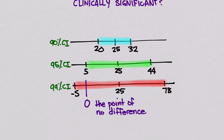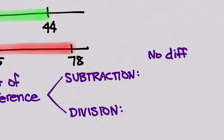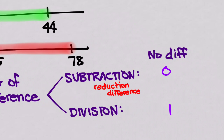Let's talk about this point of no difference a little more. When comparing things, you'll use two different methods: subtraction and division. When you subtract two things that are the same, you get 0 — that's when there's no difference. When you divide two things that are the same, you get 1. Subtractions apply to things like the blood pressure example — risk reduction or difference. Division applies to things like odds ratios or risk ratios — anything with the word ratio in it.